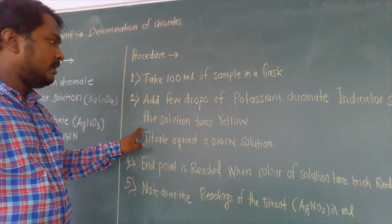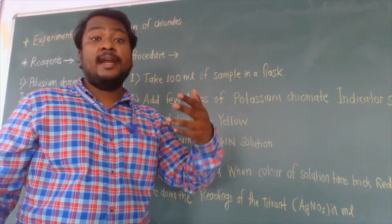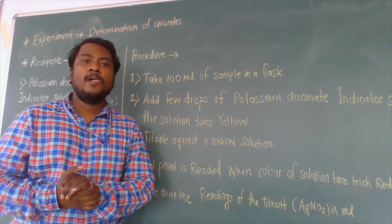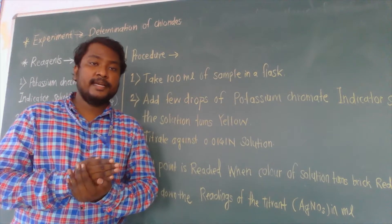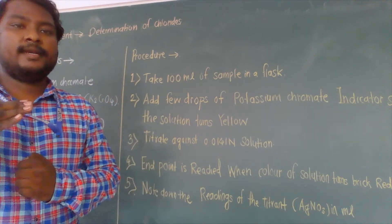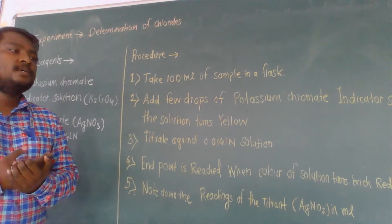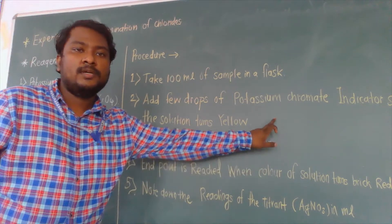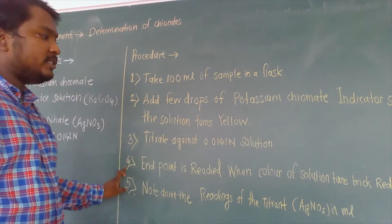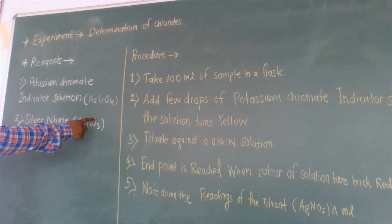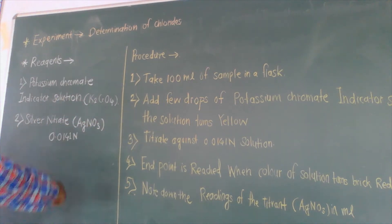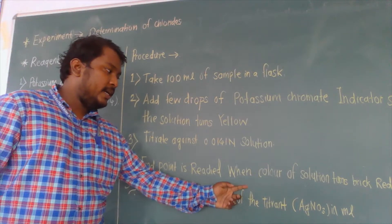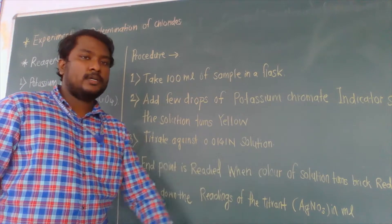Step two: add a few drops of potassium chromate indicator so that the solution turns yellow. After adding two to four drops of this potassium chromate indicator, the solution turns yellow, which indicates the presence of chloride content in the water or wastewater sample. Step three: titrate against 0.0141 normal silver nitrate solution (AgNO3). The end point is recorded when the color of the solution turns brick red.